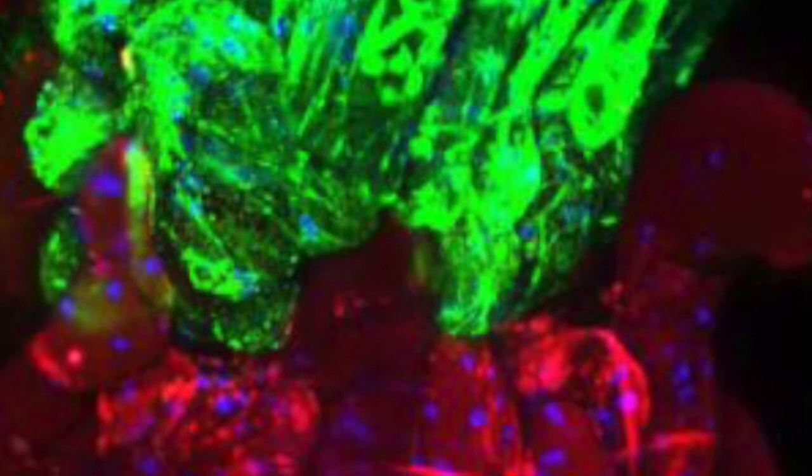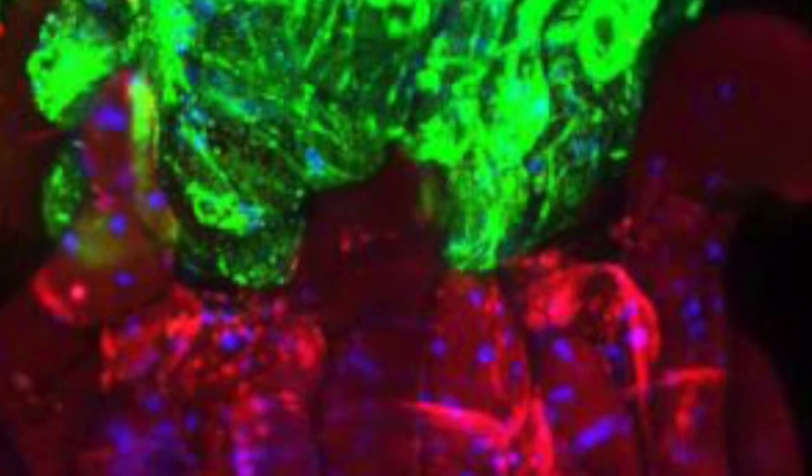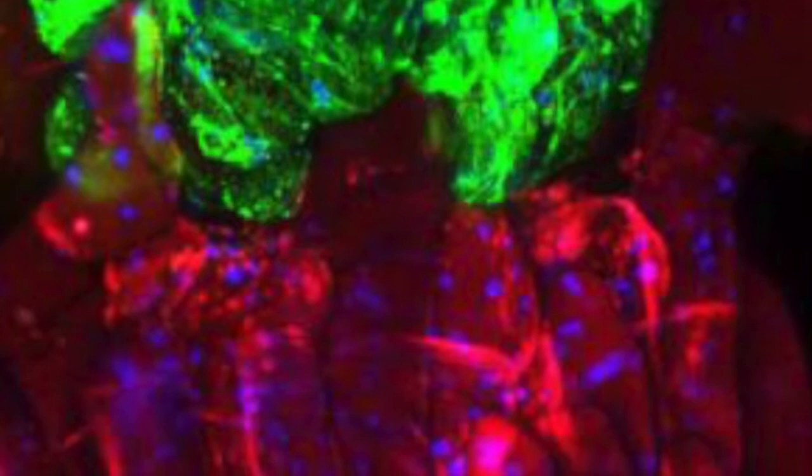And you do the graft at the base of the hypocotyl, yeah? Yeah, what you do is that you cut the hypocotyl at about one week old, on one week old seedlings. And then you do the connection at this time, and then you put them on soil after when they're reconnected.